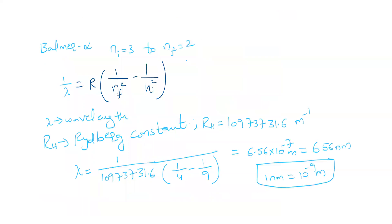To calculate Balmer alpha, the initial orbit Ni is 3 and it is jumping to the final orbit, that is the second one.